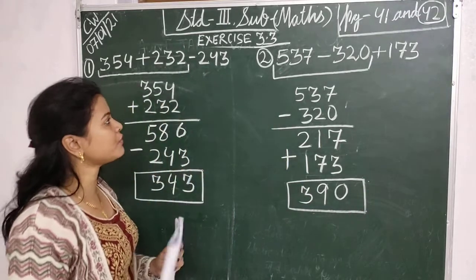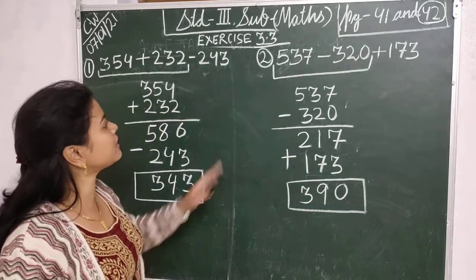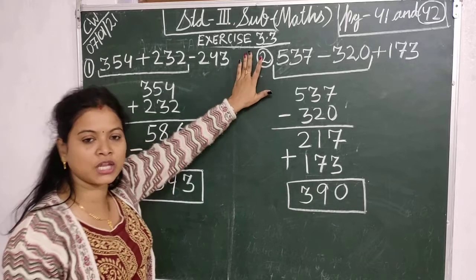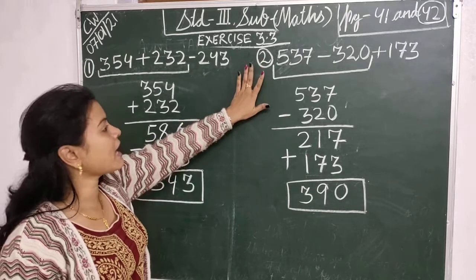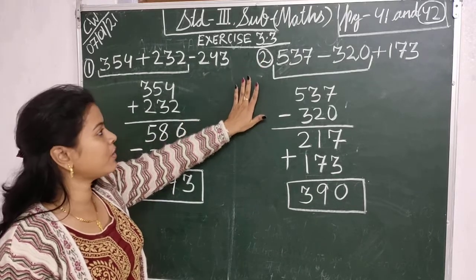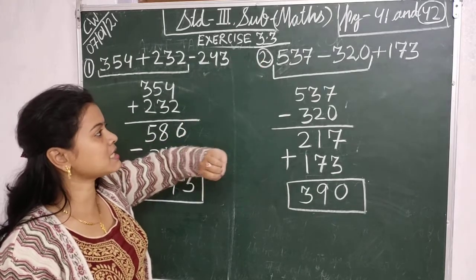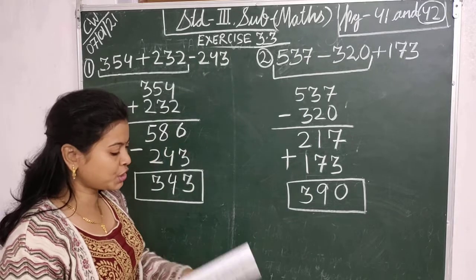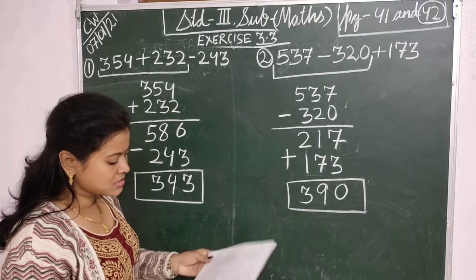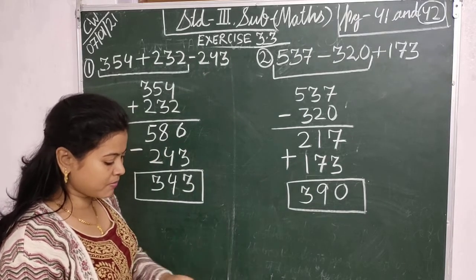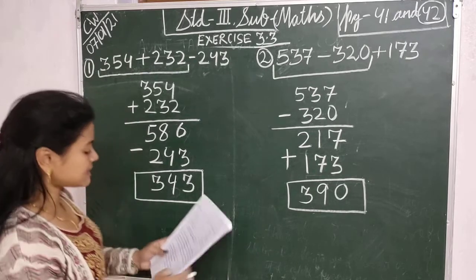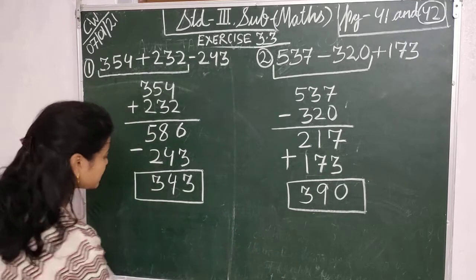So all students, do Exercise 3.3 in your copy as well as your book. Next, see page number 42 — there are some word problems on addition and subtraction.